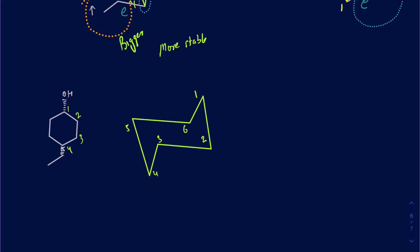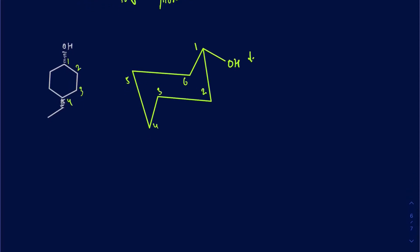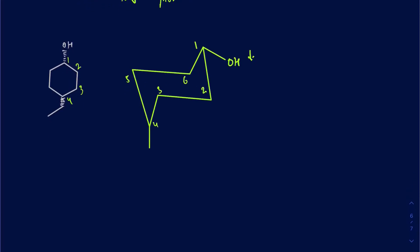On carbon 1, the OH is going back into the page, so I draw it pointing down on this chair conformation. And on carbon 4, the ethyl group is going back into the page, so it needs to be pointed down as well. The axial position in this case is pointed down. The equatorial position here would be pointing up, so I don't want to put the ethyl group on the equatorial position — so I'll take that out.